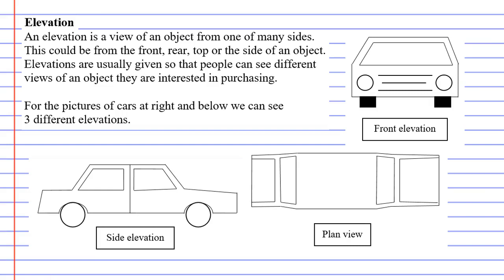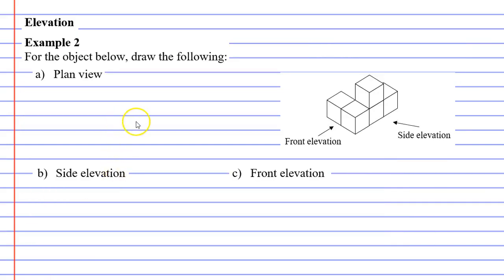We're going to move on to our example now, example two. And we need to do three elevations. We need to do a plan view, a side elevation, and a front elevation. And we're going to do it for the image drawn at right.